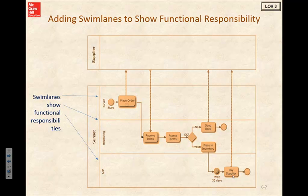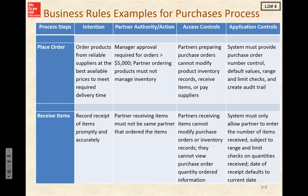We're going to pay our supplier and then stop the process altogether. Just as we had for our sales and collection process, there are also business rules for purchase processing. When we place our order, the intention is that the ordered products are from reliable suppliers with the best available prices. We also have authority limits: manager approval is required for orders over $5,000.